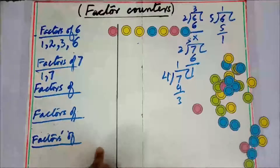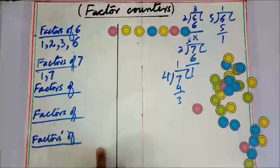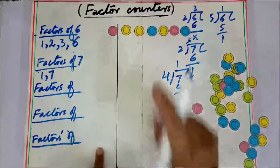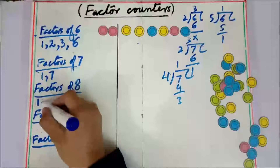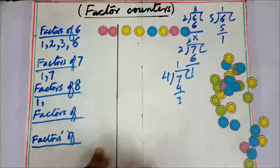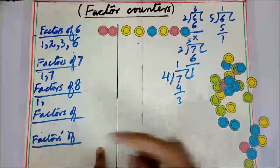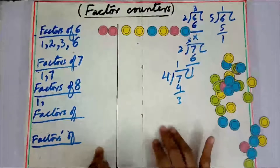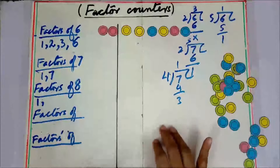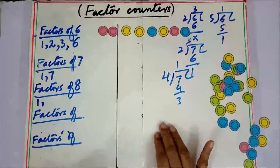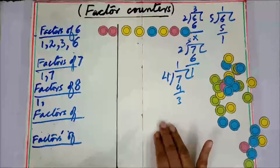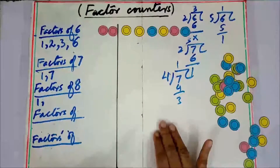Now we take eight. You should note that one is always a factor of any whole number, whatever that number is. You have also observed that the number itself is always a factor of the number — this applies to all the examples we have done.